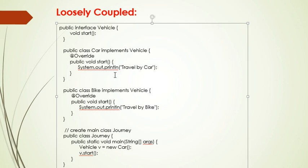In this example, Journey class, Car class, and Bike class are loosely coupled. It means Vehicle is an interface.